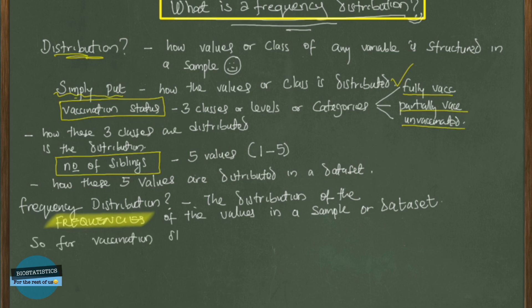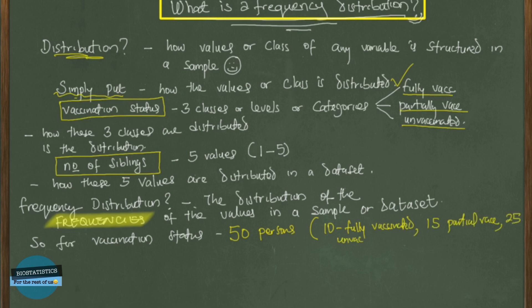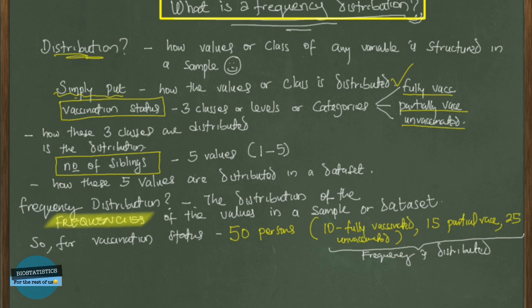For example, for vaccination status, we collected data from 50 individuals and got these results: 10 of them were fully vaccinated, 15 were partially vaccinated, and 25 were unvaccinated. This is simply put the distribution of the frequencies in this sample of 50.